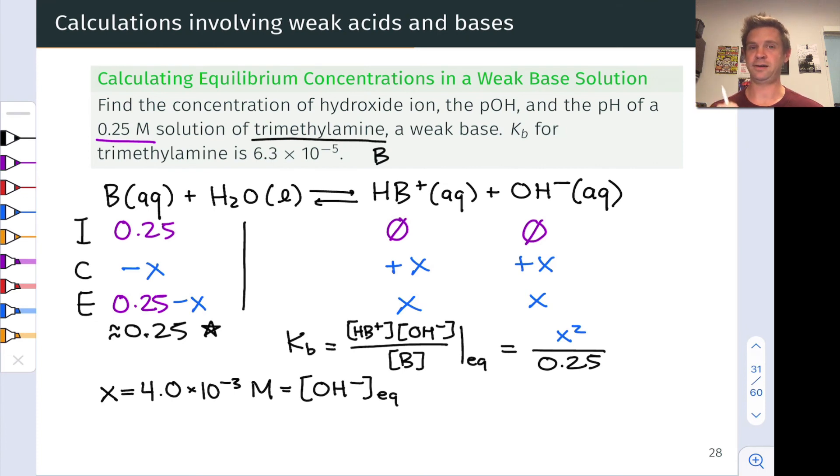Let's pause and note that in this weak base situation, because the base generates hydroxide, the X value is the molarity of hydroxide at equilibrium. We can find the pOH by taking the negative base 10 logarithm of that concentration: 2.4. This is not the pH—if it were, that would be problematic because it would imply a pH less than 7 in a basic solution, which doesn't make sense conceptually.